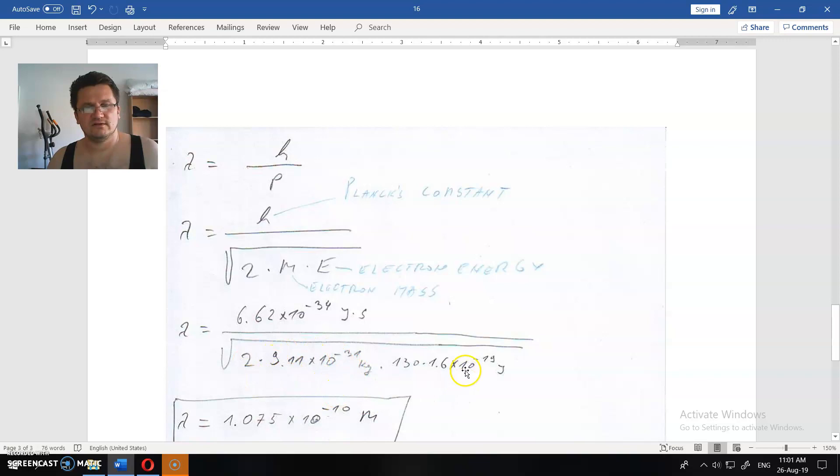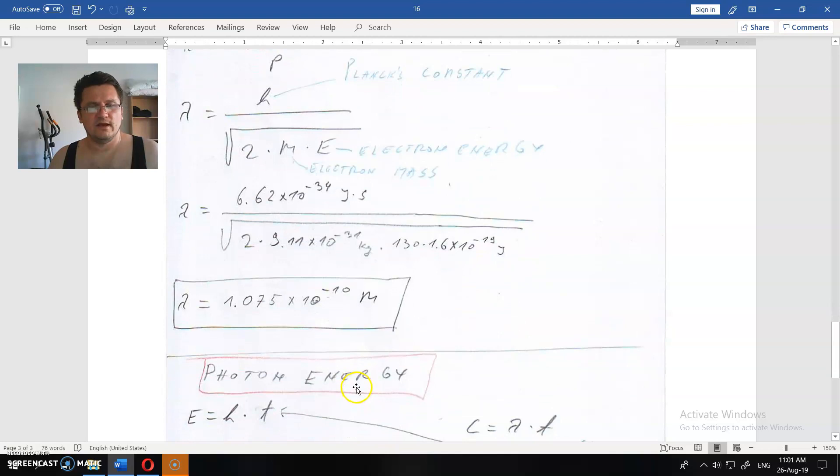This is the Planck constant. This is 2. This is the mass of the electron. This is its energy in joules. And when you calculate all of this, you will get the wavelength of the electron as this one. Okay?